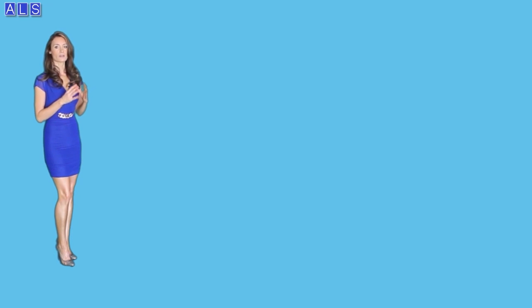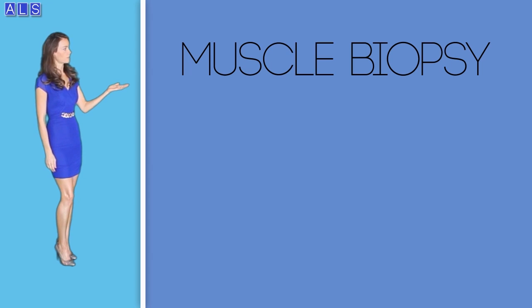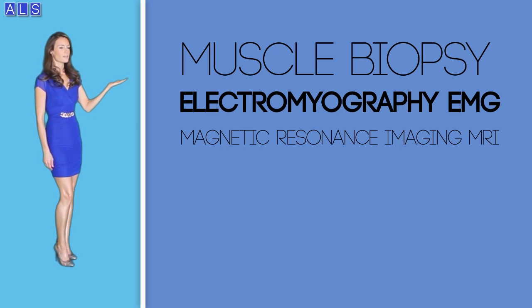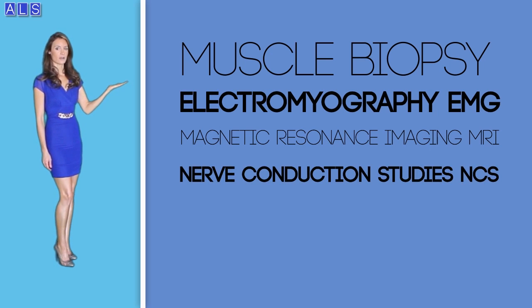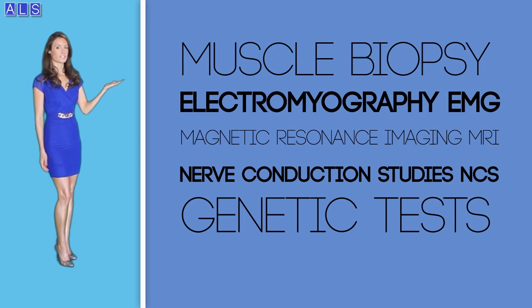There is still no single test for diagnosing ALS. A person suspected of having ALS goes through several clinical examinations and diagnostic tests to exclude the chances of other neurological conditions similar to ALS. These tests may include: a muscle biopsy to investigate the affected muscles in more detail; electromyography (EMG), which examines the electrical activity of muscles during contraction and relaxation; magnetic resonance imaging (MRI), which helps detect or exclude chances of several conditions such as a herniated disc in the neck, spinal cord tumors, or other diseases with similar symptoms; and nerve conduction studies, which help find out certain muscle diseases and nerve damage by measuring the ability of nerves to send impulses to muscles in different parts of the body.